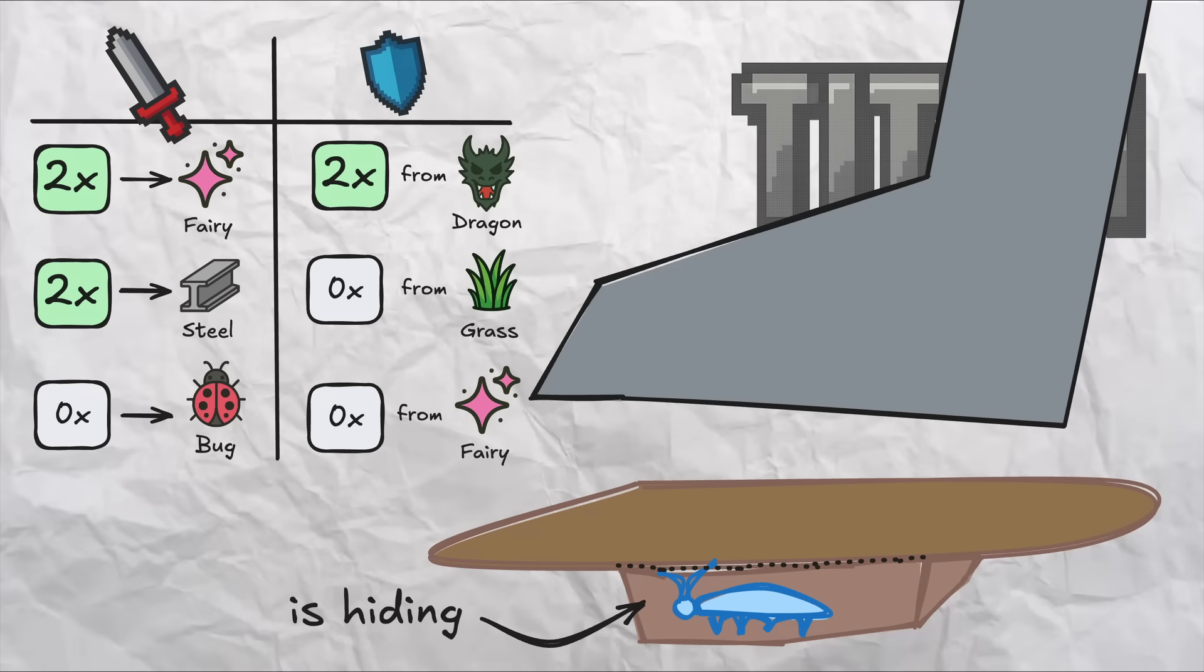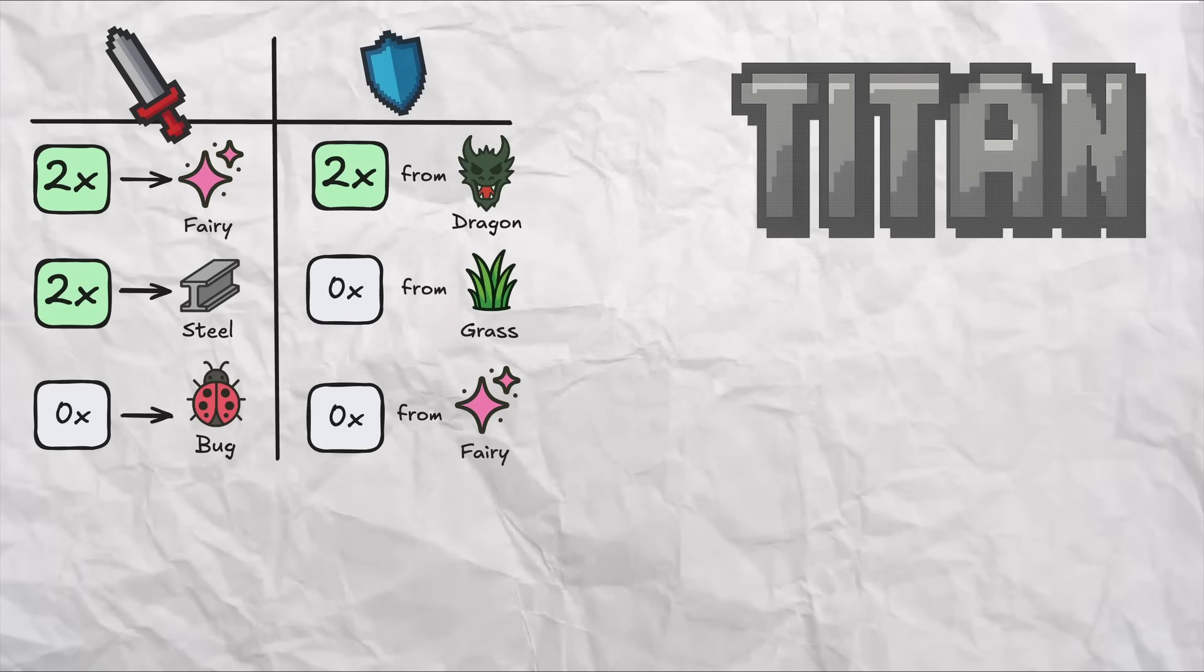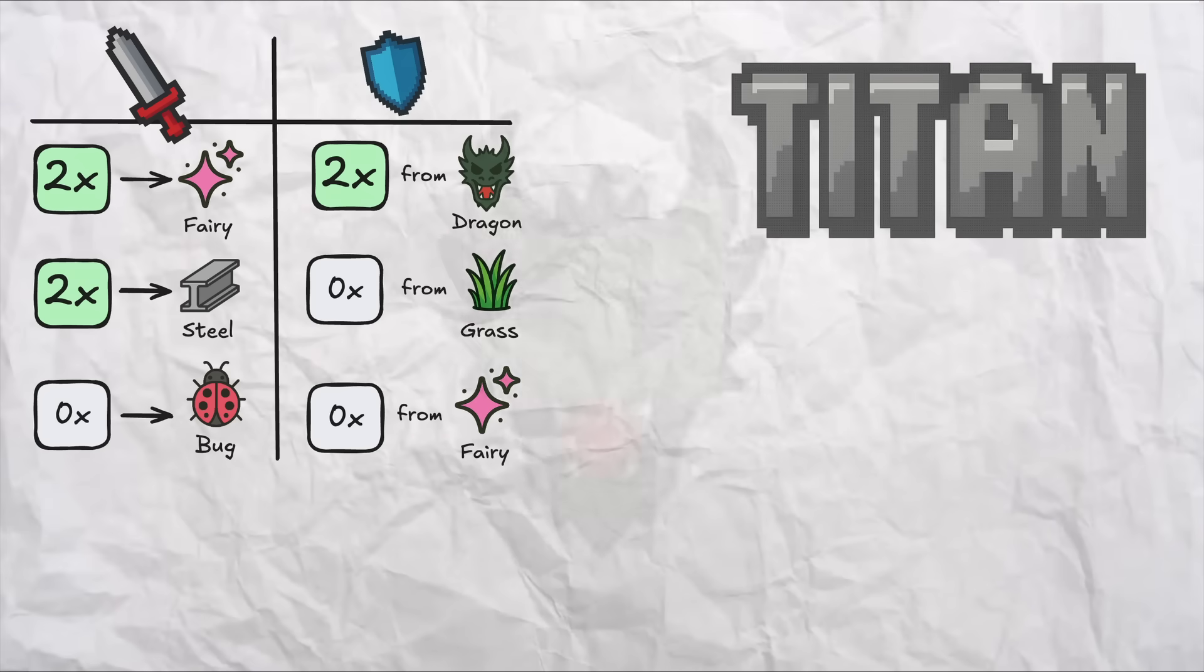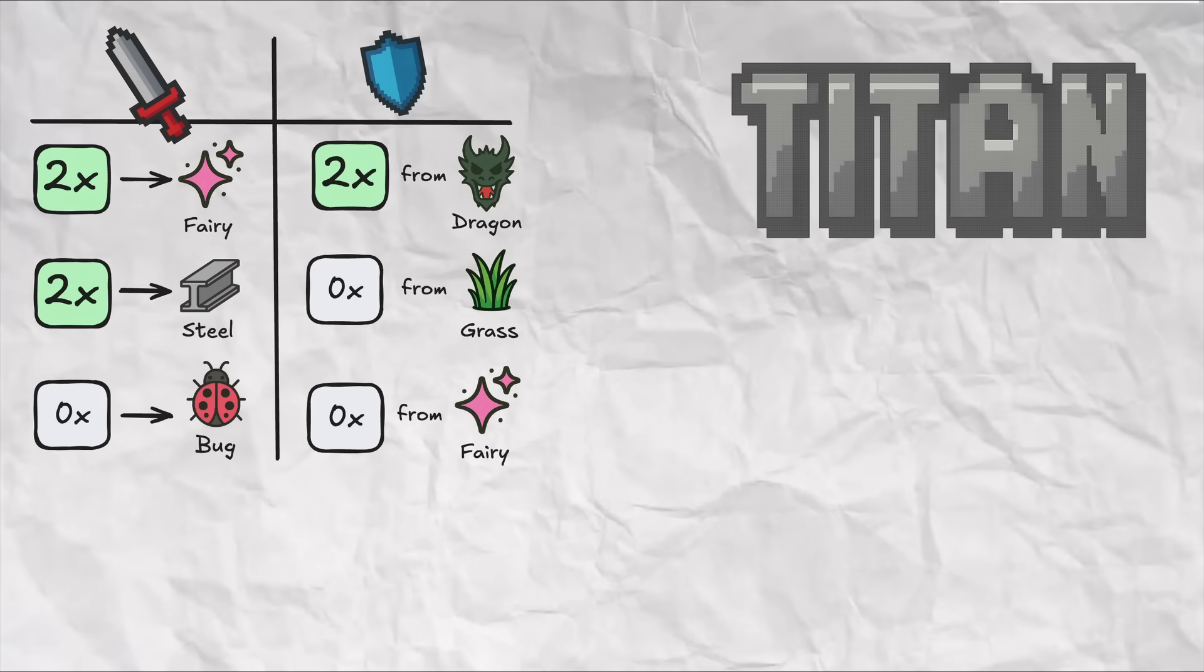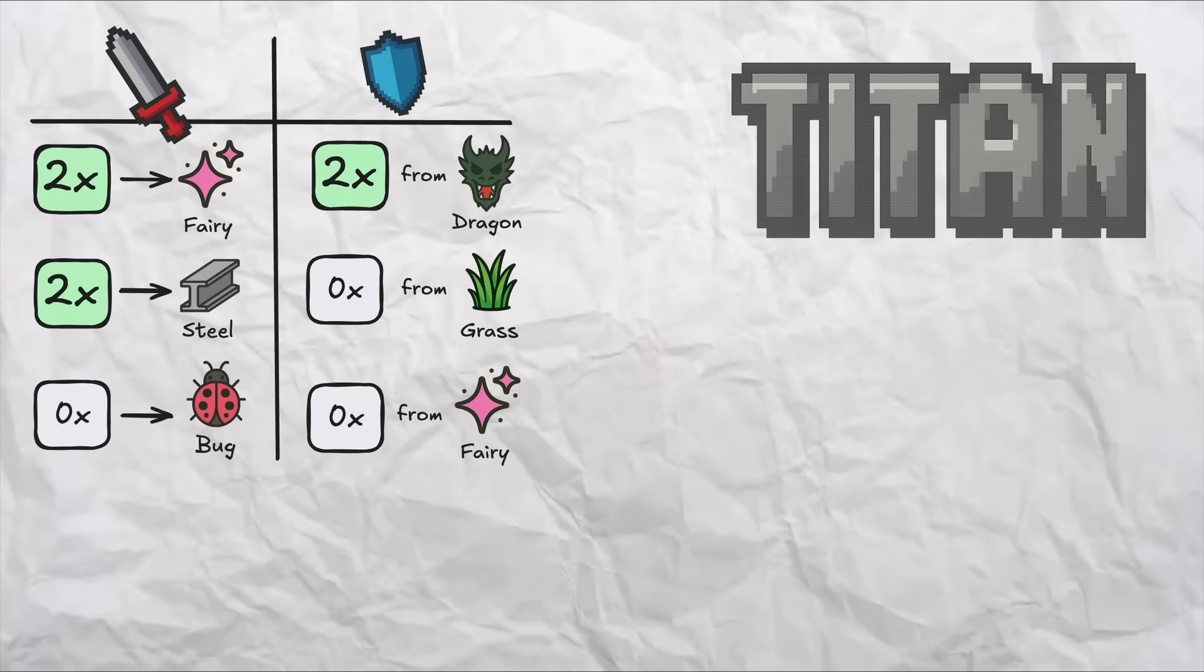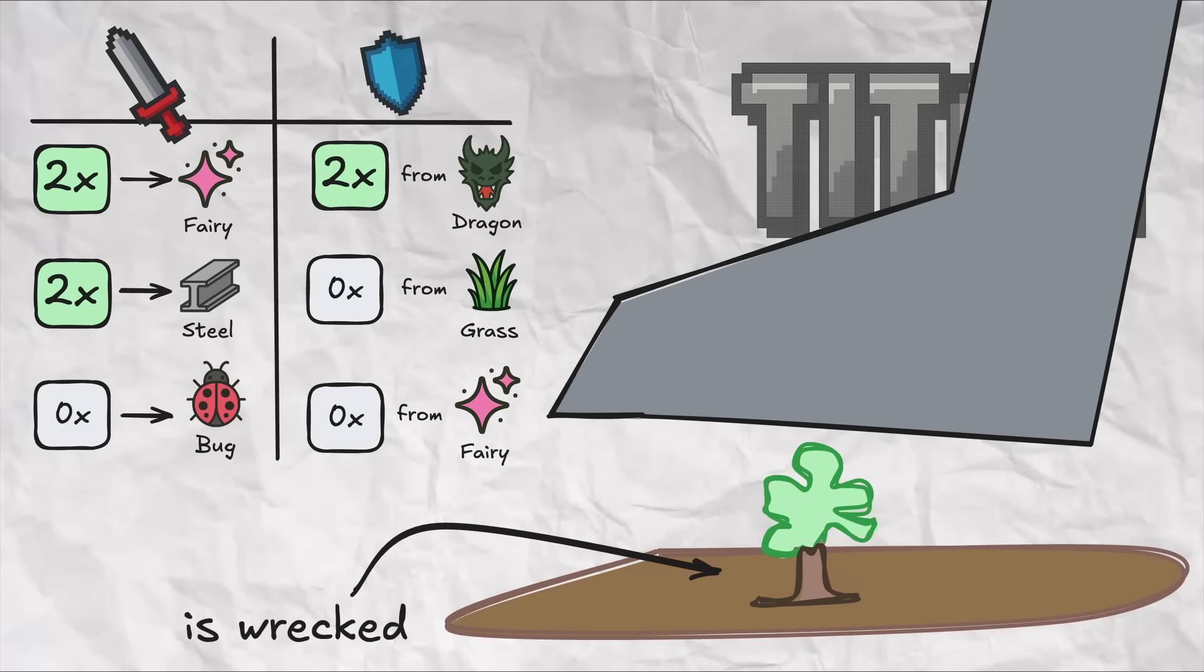While dragons are smaller than Titans typically, dragons' increased agility and ferocity would be a match to take down a Titan. Think Vision air cannonballing into giant man. Trees and plants are also no match when a gigantic Titan comes strolling along.